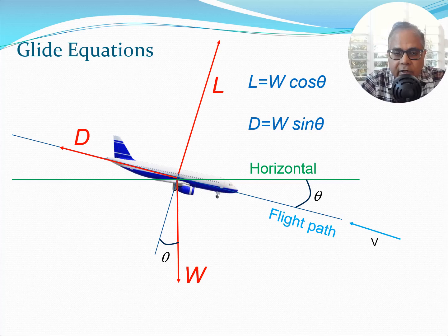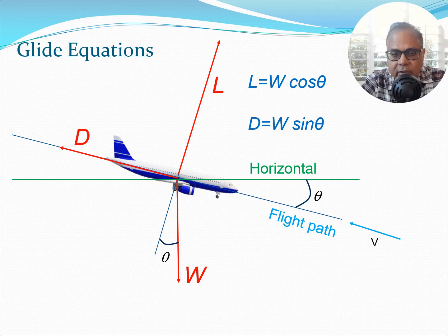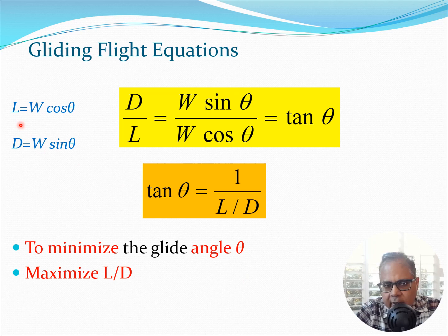So let's immediately start writing the equations for this. You can immediately see that in the vertical direction I can get L = W cos θ and in the flight path direction I get D = W sin θ. So this is the component which is actually playing the role of a thrust here. These are the two equations for a glider.